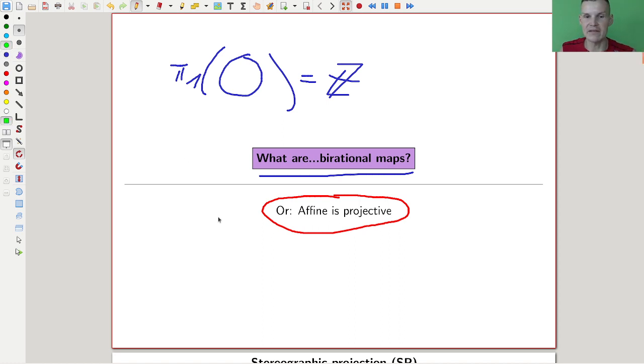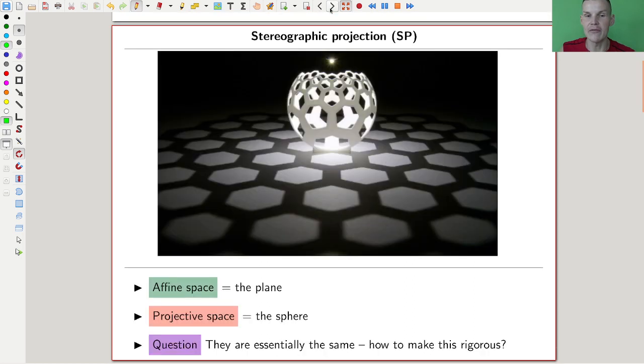And the good thing about it is it kind of identifies two things essentially the same, which I was identifying anyway all the time in some sense: affine and projective space. So let's have a look.